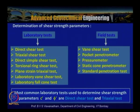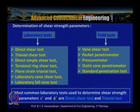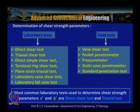The Standard Penetration Test measures soil resistance through the SPT N-value. Correlations exist between N-values and undrained cohesion or friction angle. The most common laboratory tests used to determine shear strength parameters are: C and phi for total stress parameters, and C' and phi' for effective stress parameters — achieved through the direct shear test and triaxial shear test.